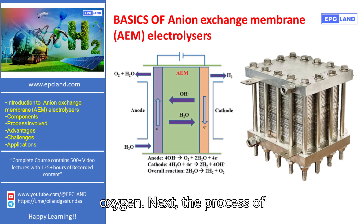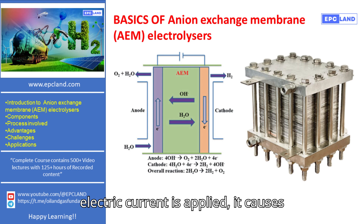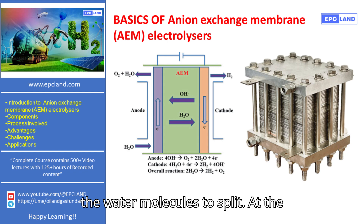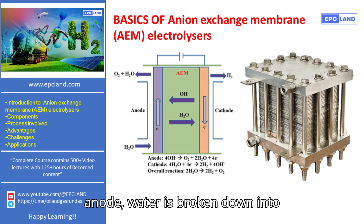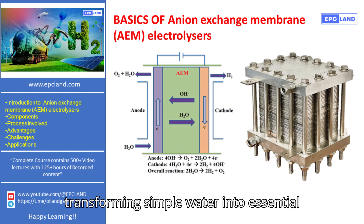Next, the process of electrolysis takes place. When an electric current is applied, it causes the water molecules to split. At the anode, water is broken down into hydroxide ions, denoted as OH⁻, and oxygen gas. This is where the magic of electrolysis happens, transforming simple water into essential elements.